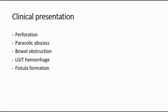The third type of diverticulitis is the complicated type, which is also the most dangerous. It is associated with perforation of the colon, paracolic abscess secondary to localized perforation, and bowel obstruction due to stricture or adherence to a diverticular mass. It can also present with lower GIT hemorrhage, which occurs when there is an ulcerated vessel at the neck of the diverticulum, and lastly fistula formation — especially after an operation on the colon or a drainage procedure of the pericolic abscess.